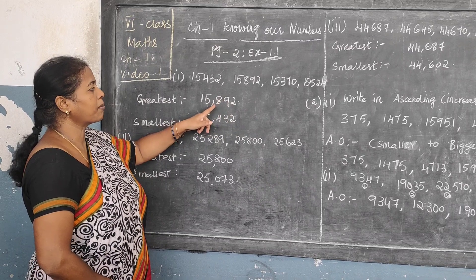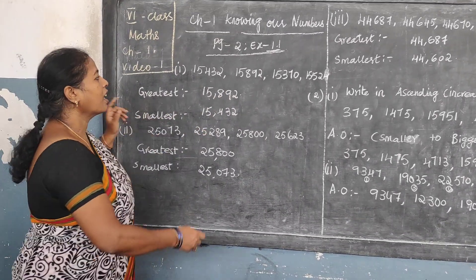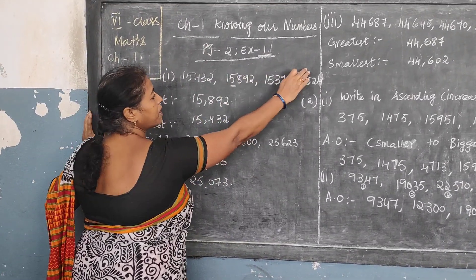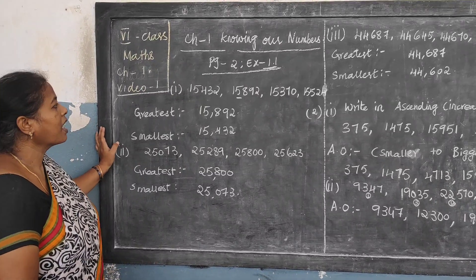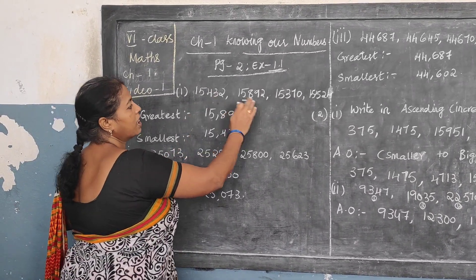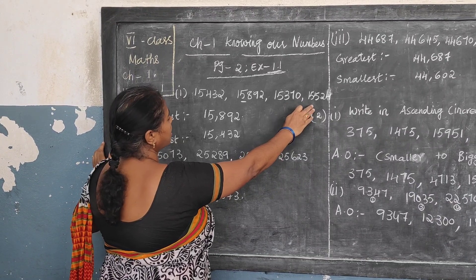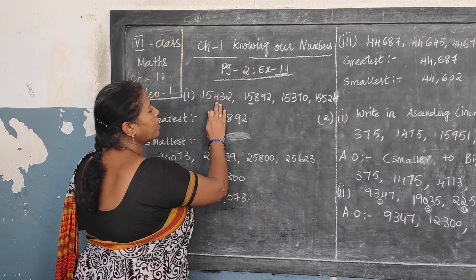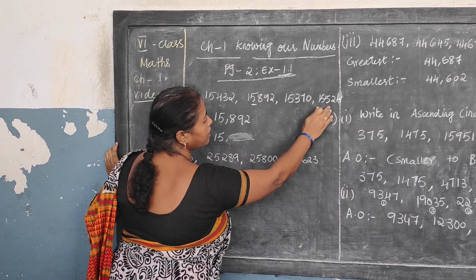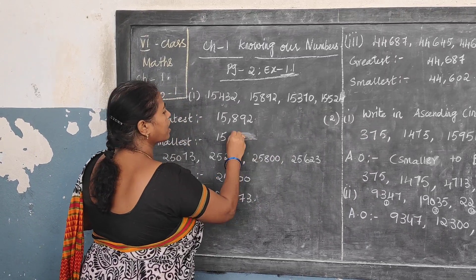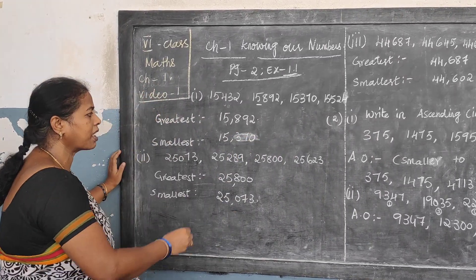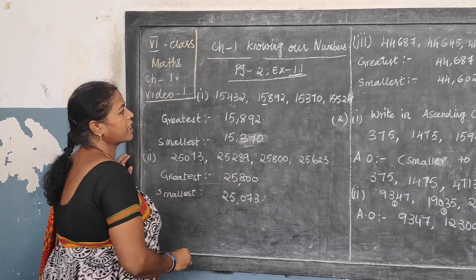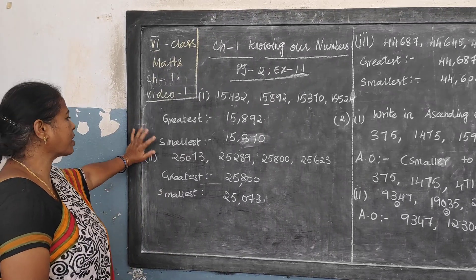Greatest number — not digit, greatest number. Next, the smallest — they are telling you to check. Now 15,892 you leave off. From the other three numbers you are going to check which is the smallest. See: 15,432 — 15,370 — 15,524. So 15,370 is the smallest number.